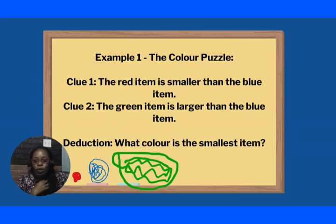And clue number two says the green item is larger than the blue. And then I drew a green item and it must be larger than the blue. So those were the two clues that I was given. Now, what am I to deduce from that information? Deduction is, what color is the smallest item? And based on my sketch here, just by looking at it, you will realize that the red item is the smallest item.